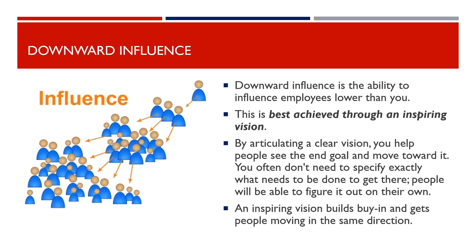Downward influence is the ability to influence employees lower than you, and is best achieved through an inspiring vision. By articulating a clear vision, you help people see the end goal and move toward it. You often don't need to specify exactly what needs to be done to get there — people will be able to figure it out on their own. An inspiring vision builds buy-in and gets people moving in the same direction.